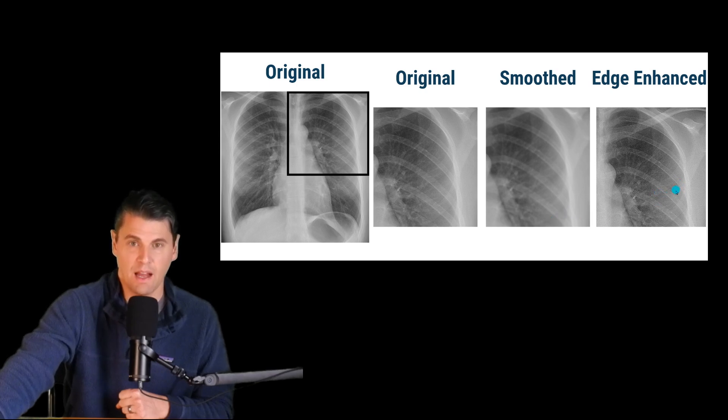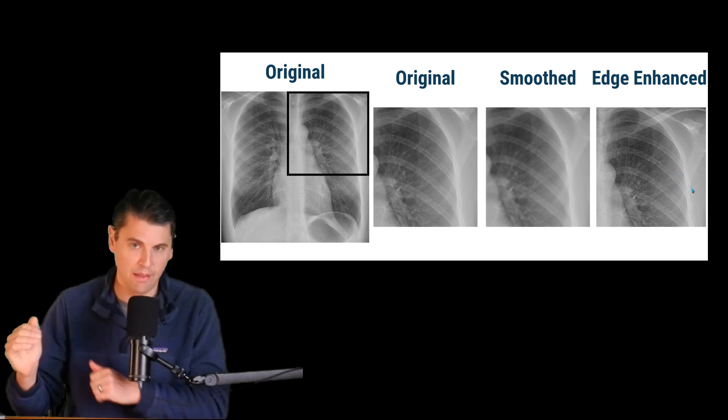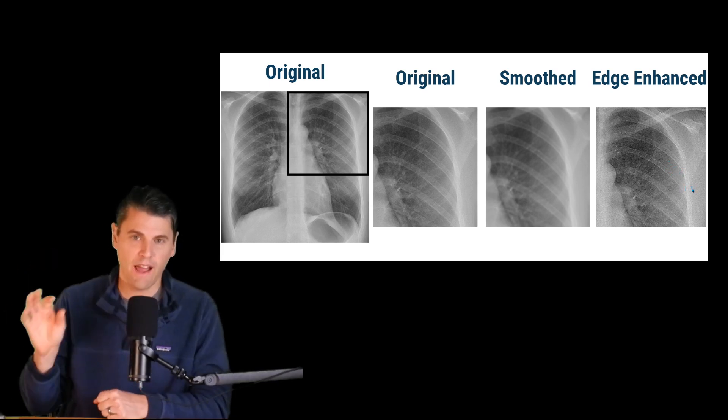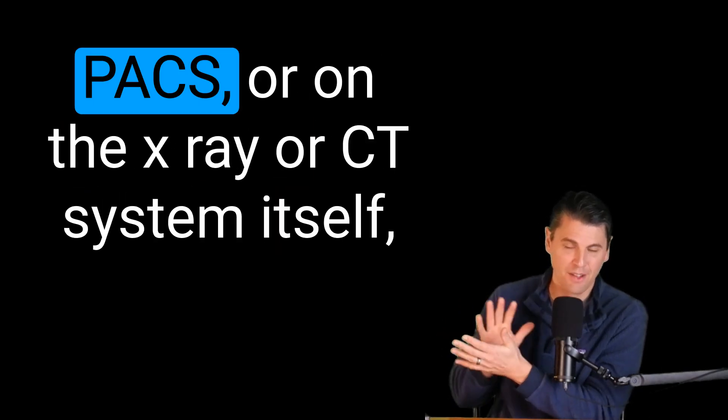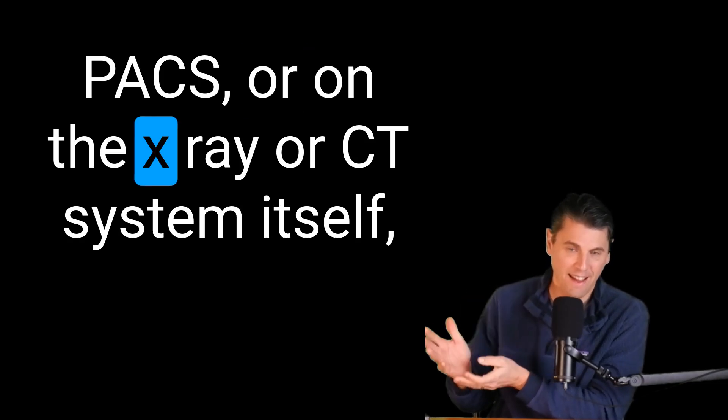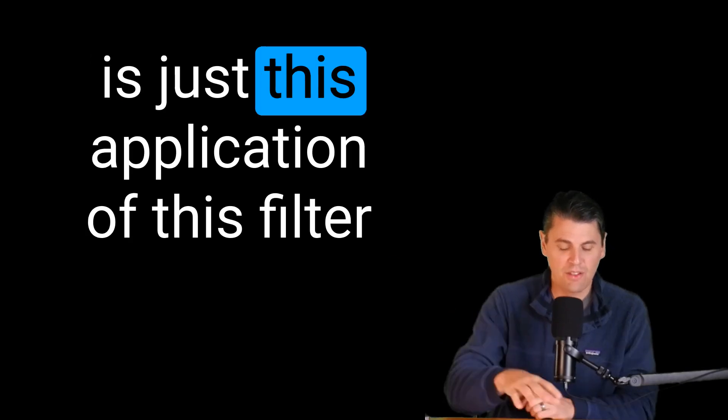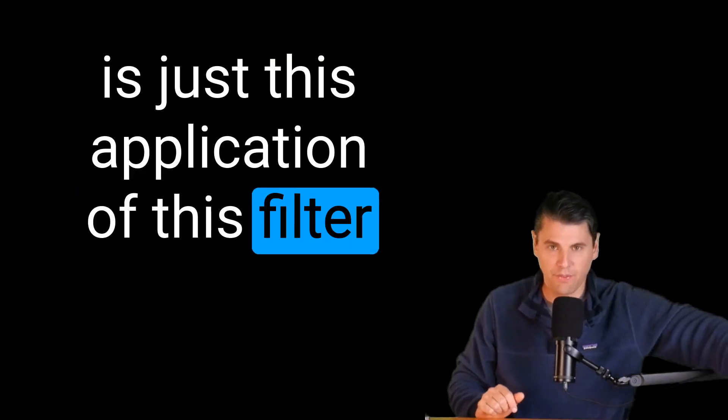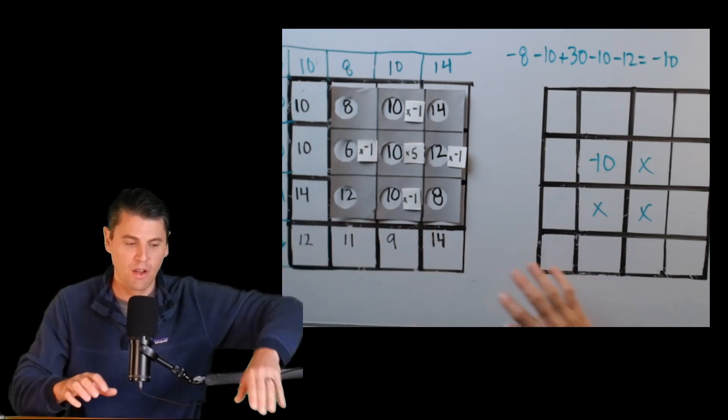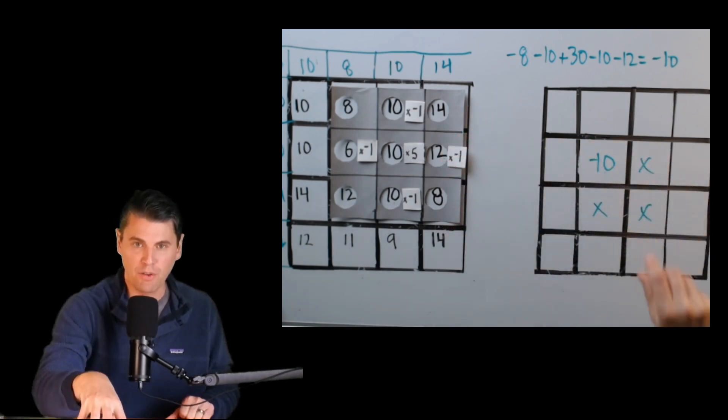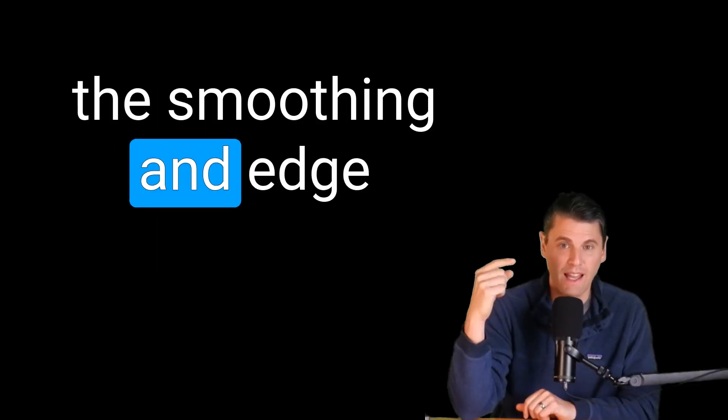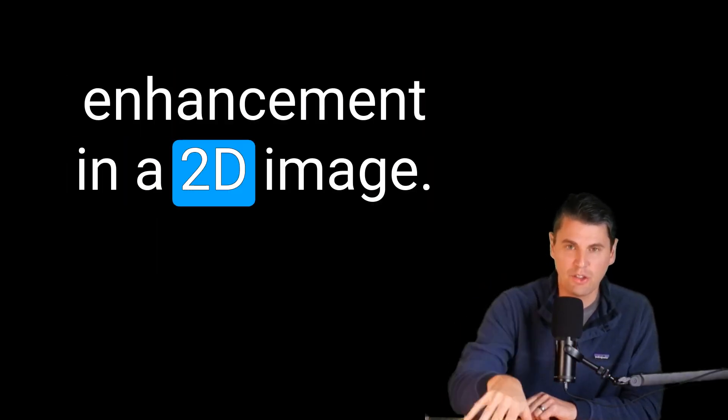And then the edge enhancement operation, on the other hand, is actually going to make the edges a little bit sharper here between, for instance, the rib and the background. All that's happening under the hood on the actual viewer or on the actual packs or on the x-ray or CT system itself is just this application of this filter where we're moving that filter across the image. We're applying those multiply and add operations, and then we're filling up our new matrix. Now you know all the details on the smoothing and edge enhancement in a 2D image.